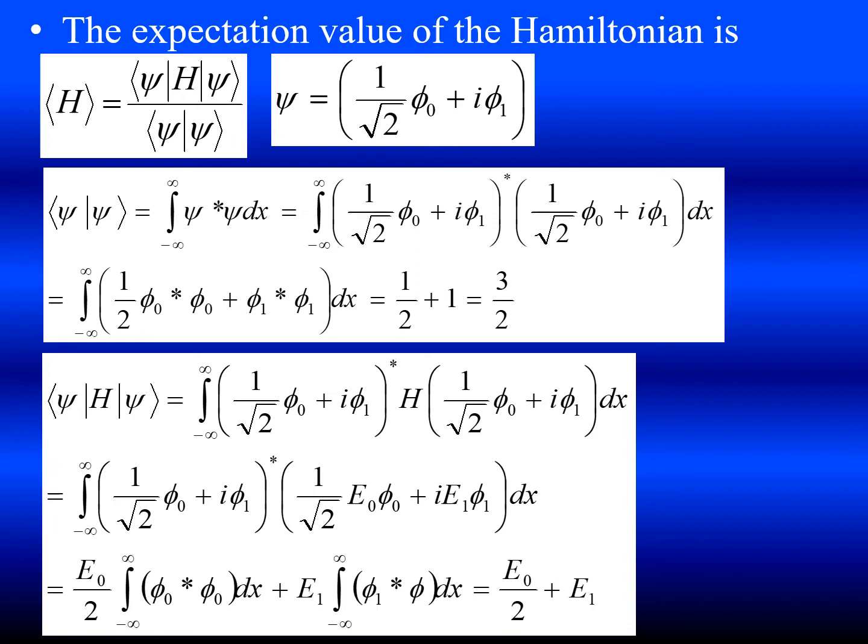Integral phi naught star phi naught dx is equal to 1. Similarly integral from minus infinity to plus infinity phi 1 star phi 1 dx is equal to 1. So if you substitute this we can get the probability of finding the particle is equal to 3 by 2.